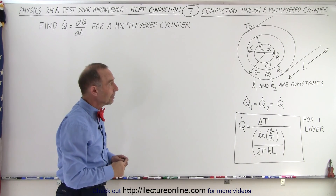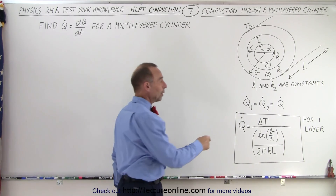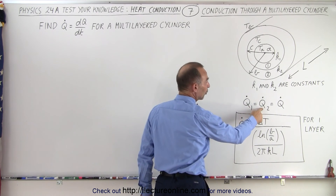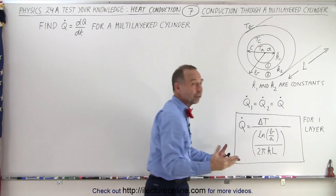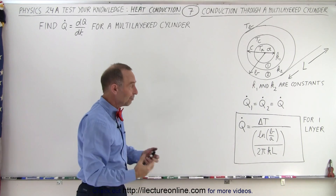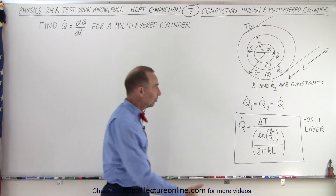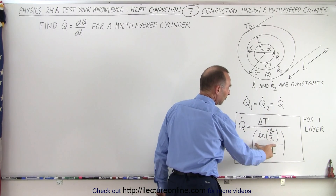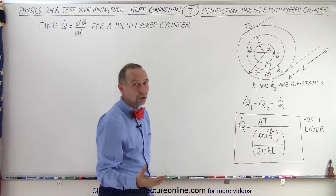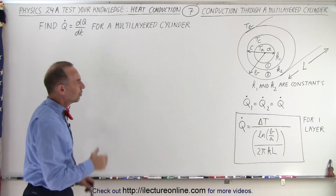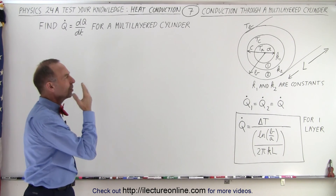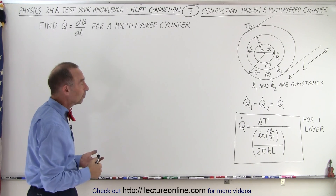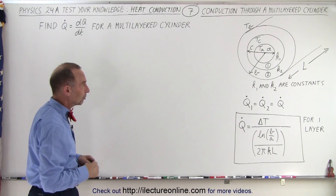K1 and K2 in this case are indeed constants, and we can write the equation that the heat flow through the first layer must equal the heat flow through the second layer, which must equal the total heat flow through the cylinder — they have to be constants. For a single layer, we derived this equation before: the temperature difference divided by the denominator, which we call the heat resistance. So how do we find the equation for the heat flow, Q dot, through a multi-layered cylinder?